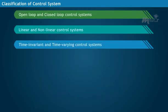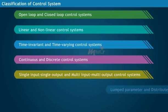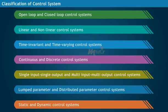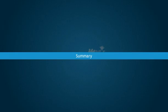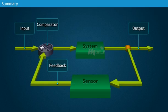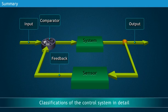From this, we can infer that the control systems can be classified based on their behavior. This brings us to the end of the lesson. We have learned classifications of the control system in detail. Thank you.